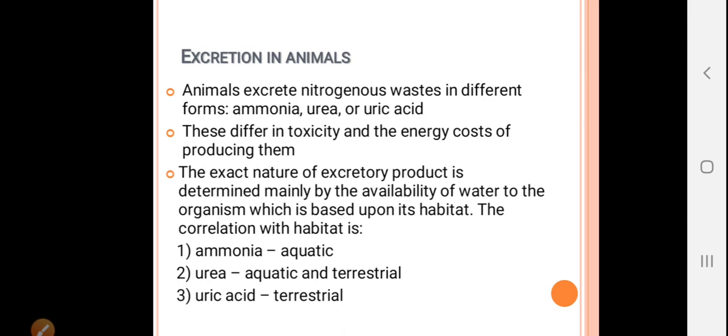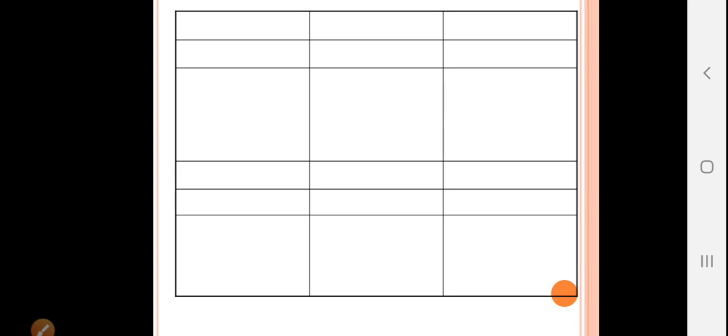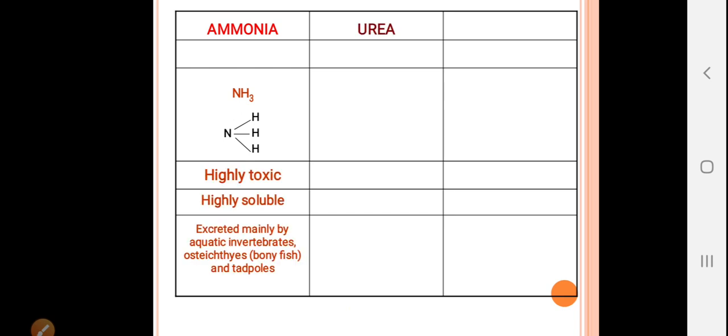Uric acid is only excreted by terrestrial animals. Here are some charts of ammonia, urea, and uric acid, in which you see their formulas, their toxicity, and the animals that excrete these products.